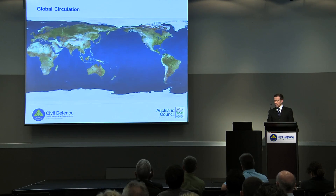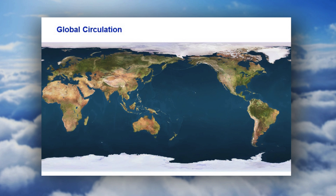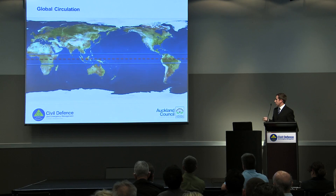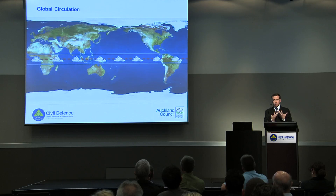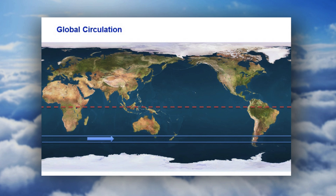Moving on to global circulation, in the context of these big cyclonic systems which could affect Auckland. At the equator we've got the Intertropical Convergence Zone, which is basically 10 degrees north and 10 degrees south. There's a lot of convection and heat occurring in this area due to the northeasterly and southeasterly trade winds pushing heat generated in the tropics up into this zone, creating a lot of convection, rainfall, and storms. In New Zealand, we're stuck in what's known as the roaring 40s — westerly winds moving across 40 to 50 degrees latitude through the Southern Ocean, not hindered by much land mass.